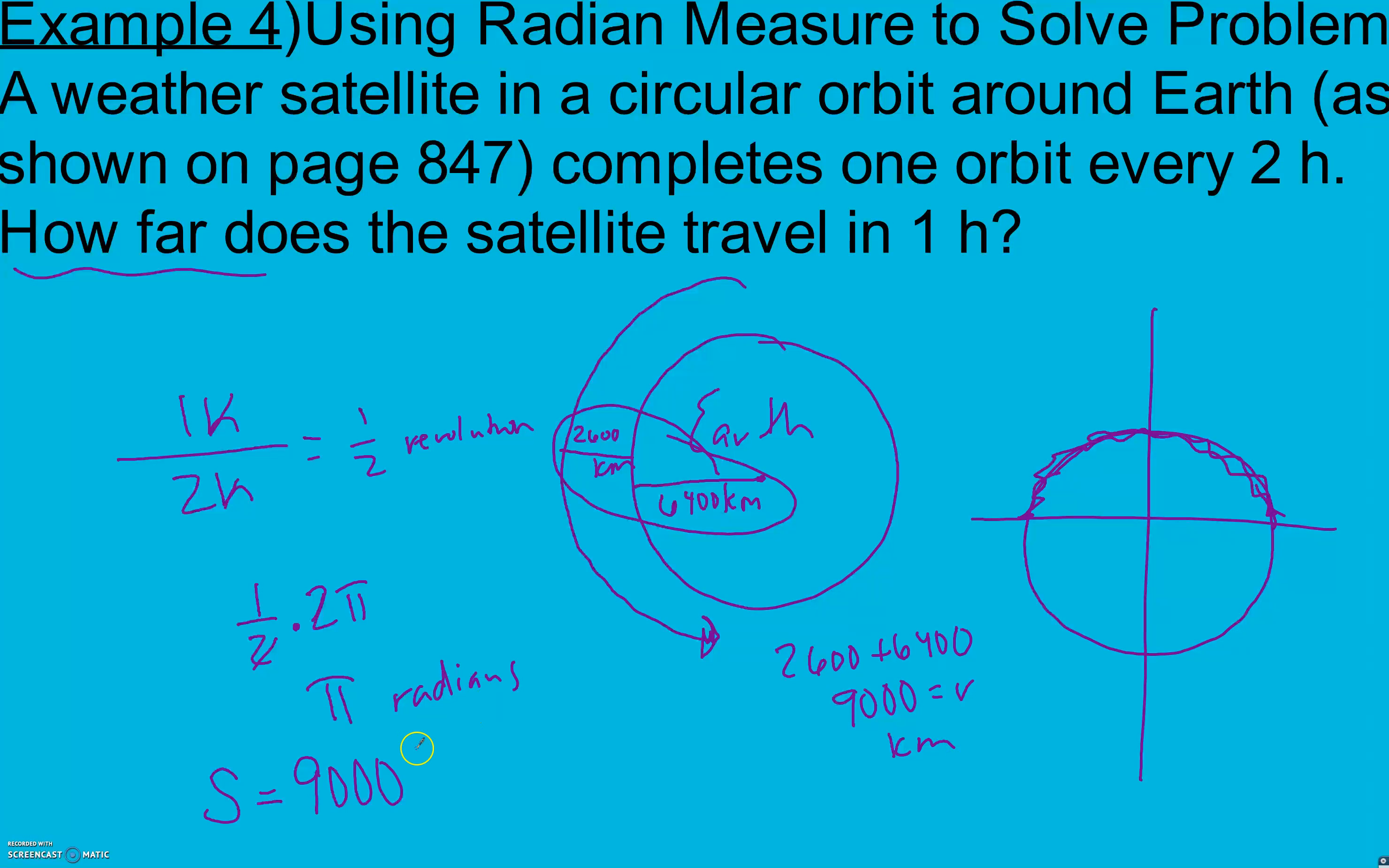And we said that our radian measure is π. So our arc length, or the distance that we're going to travel, is 9,000 times π, which is about 28,274 and a third kilometers.